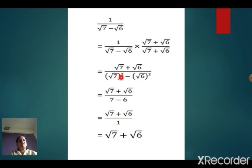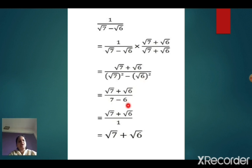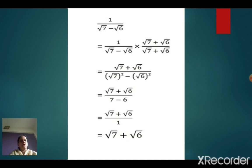It will become root 7 squared minus root 6 squared. Keep the numerator as root 7 plus root 6, but root 7 squared will become 7 and root 6 squared will become 6. So 7 minus 6 will become 1. Your final answer will be root 7 plus root 6 with denominator 1, meaning it is now a rational number as the denominator. Hope you all understood this type of question.